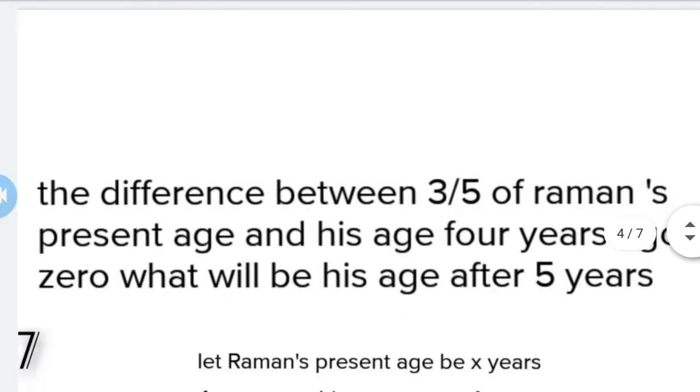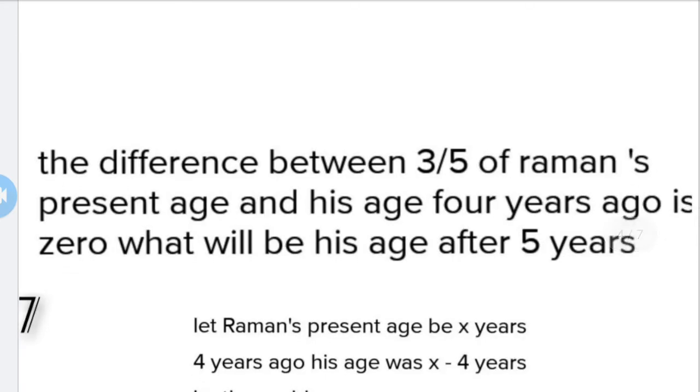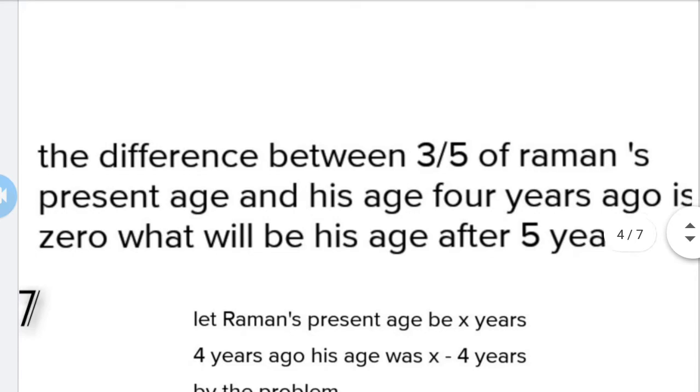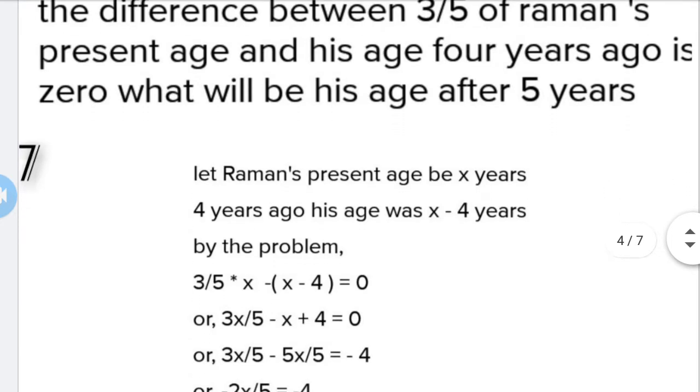What is our seventh question? The difference between three-fourths of Raman's present age and his age four years ago is zero. What will be his age after five years? We are going to solve that question.